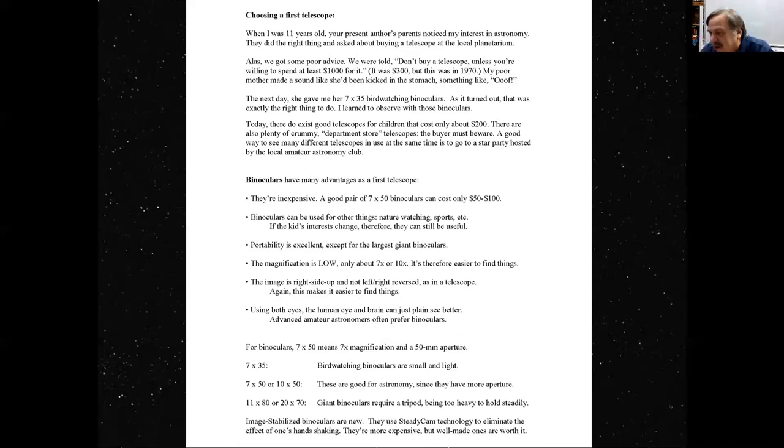Another advantage of binoculars is that the image is right side up and not left right reversed as in a telescope. A reflecting telescope, of course, you're looking into a mirror, so it's going to left right reverse the image. And even many refractors will show the image upside down, because astronomical telescopes are supposed to be pointed up at the sky, so it's thought to be not a big deal. But when you're looking through a telescope, having the image upright, not upside down, but upright, and not left right reversed, as in most telescopes, can make it much easier for a novice to find things.